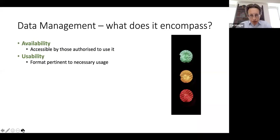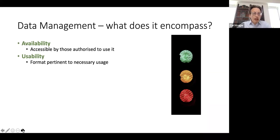Data needs to be available to those who want to use it. That may sound obvious, but if you consider the impact of ransomware — in the event that they effectively freeze your system — you would not have that availability. Similarly, usability relates to the way data is structured within your systems so that it is in a format capable of being used for the purposes you want it for.